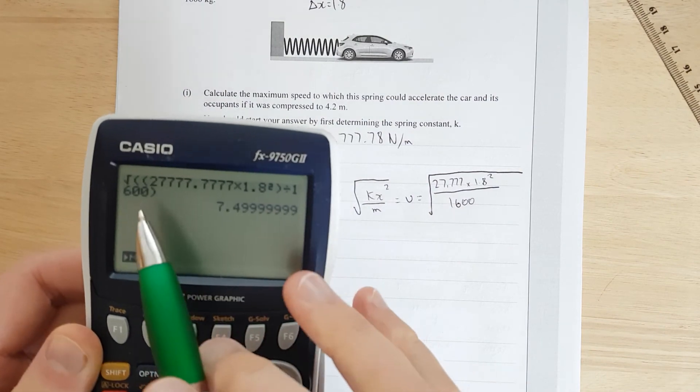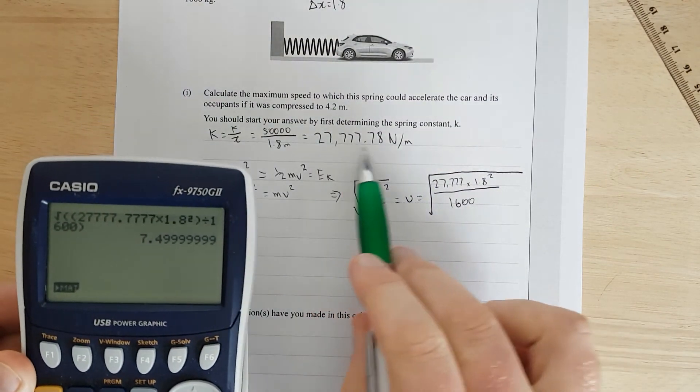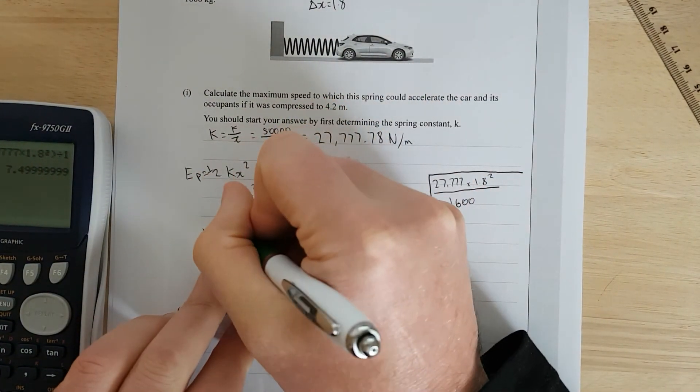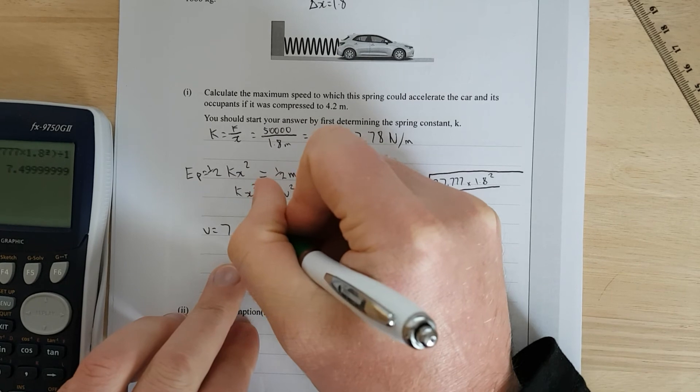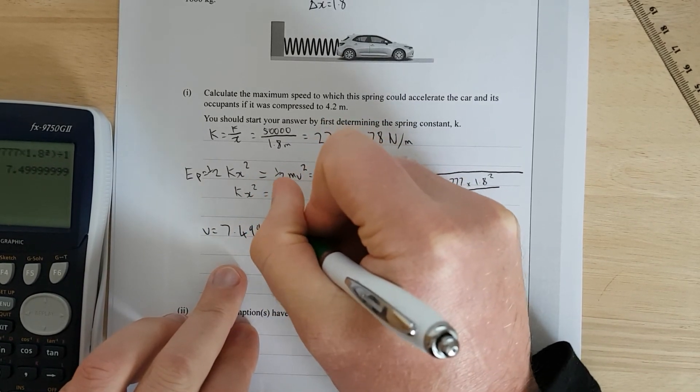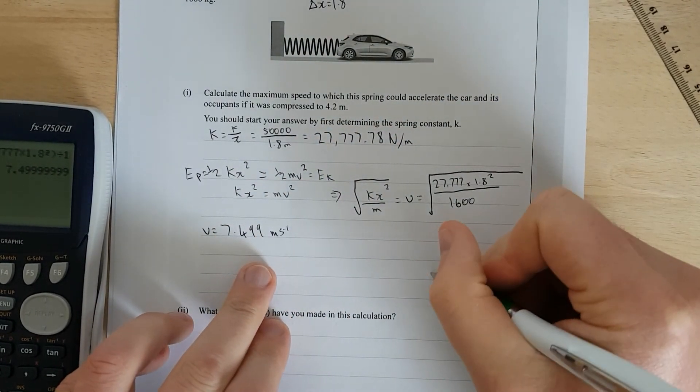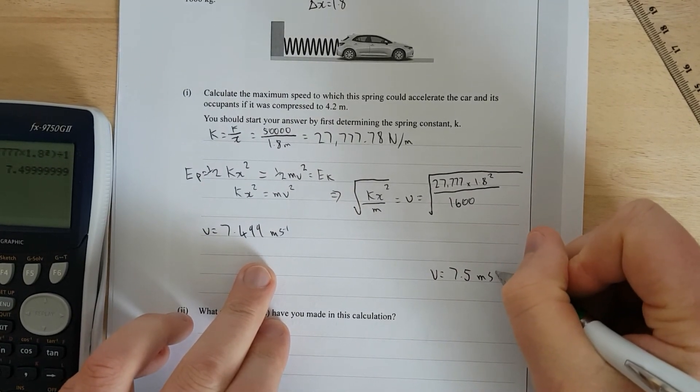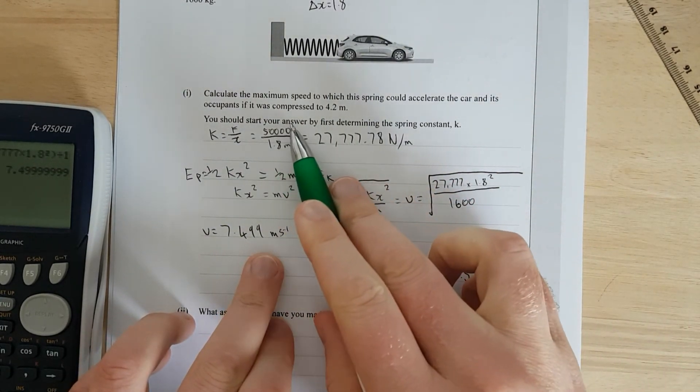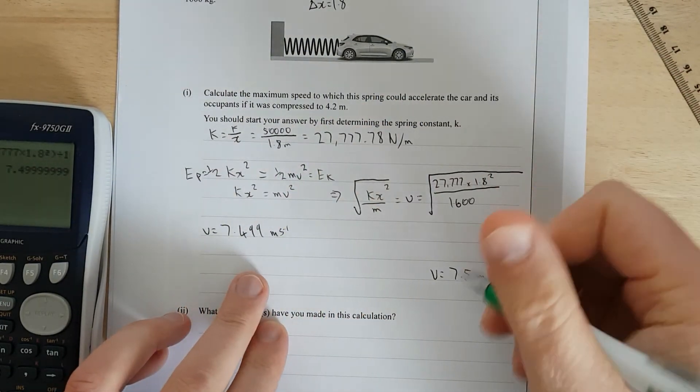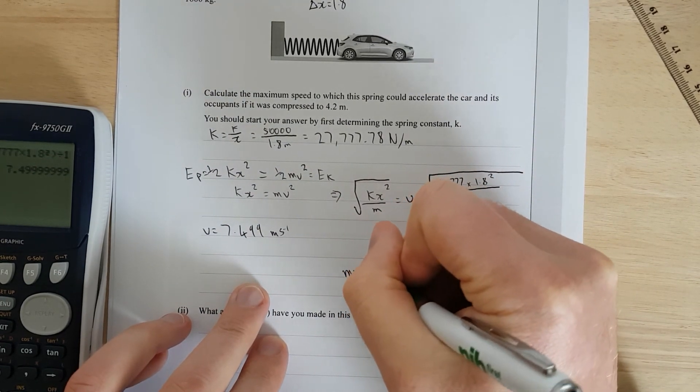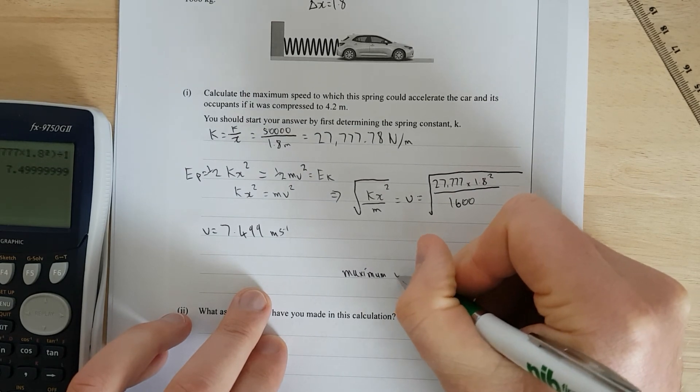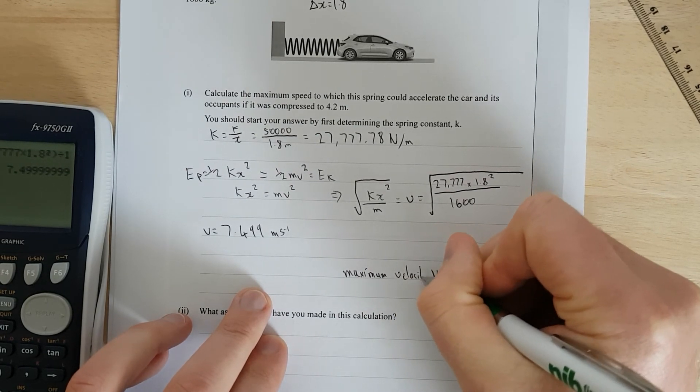So we have 7.4999 meters per second. We'll just chuck it down here, V equals 7.5 meters per second. And this really is V max, so maximum velocity.